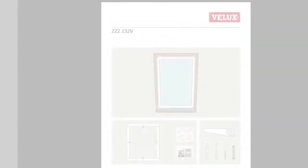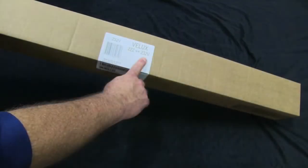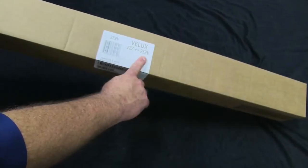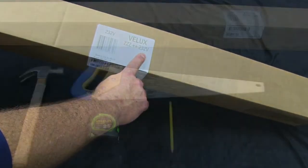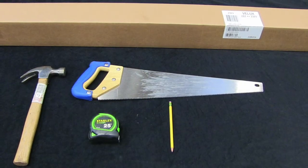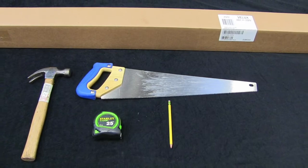Today we will be discussing the installation instructions for the VELUX ZZZ232V blind adapter kit, which allows a pre-2010 model skylight to be retrofitted with a current model blind. This video will show how to mount the blind adapter to a venting skylight as indicated by the V on the ZZZ232V part number. The blind adapter for a fixed skylight would be indicated by a ZZZ232F.